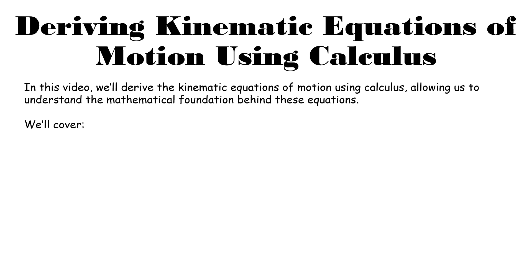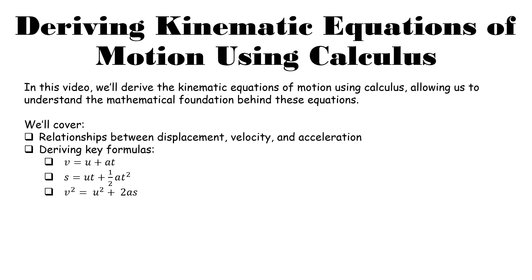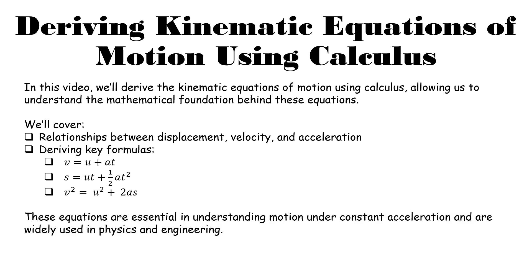In this video we're going to look at the relationship between displacement, velocity and acceleration. We're going to derive the three key formulas we use for uniform acceleration: V = U + AT, S = UT + ½AT², and V² = U² + 2AS. It's worth knowing that this could be examined — it is one of our learning outcomes for the applied maths course at both levels.